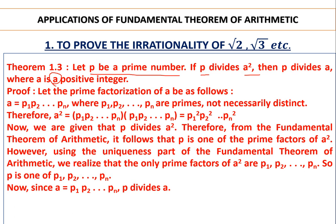For example, if 3 is a prime number and 3 divides 12², then 3 divides 12 also. In that case this is not a prime number example per se, but in general we are going to prove it — that if we have a prime number p that divides a², then p also divides a.